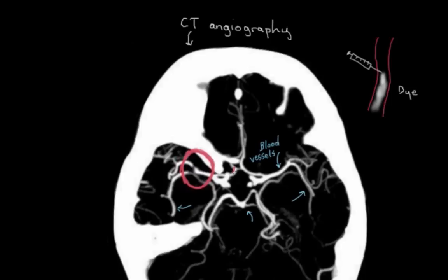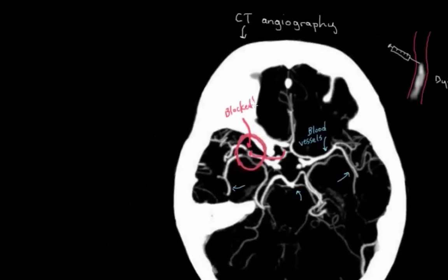Here are the blood vessels nicely lighting up — following along and everything looks good. Then we have a problem: this bit looks abnormal. This is where our blockage is, which likely caused the stroke, and this scan made it a lot easier to pinpoint that.